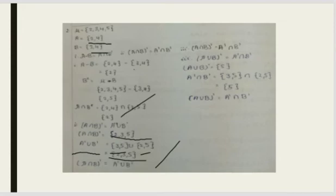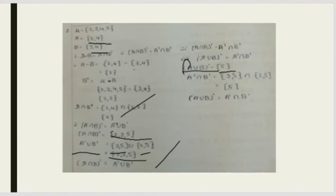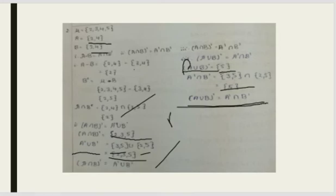The third law is (A∪B)' = A'∩B'. First find A∪B, then take its complement. Then find A' and B' separately and intersect them. Solving: A'∩B' gives {3,5}∩{2,5} = {5}, which equals the complement of A∪B. Both sides equal φ (or the same set), so the law is proved.